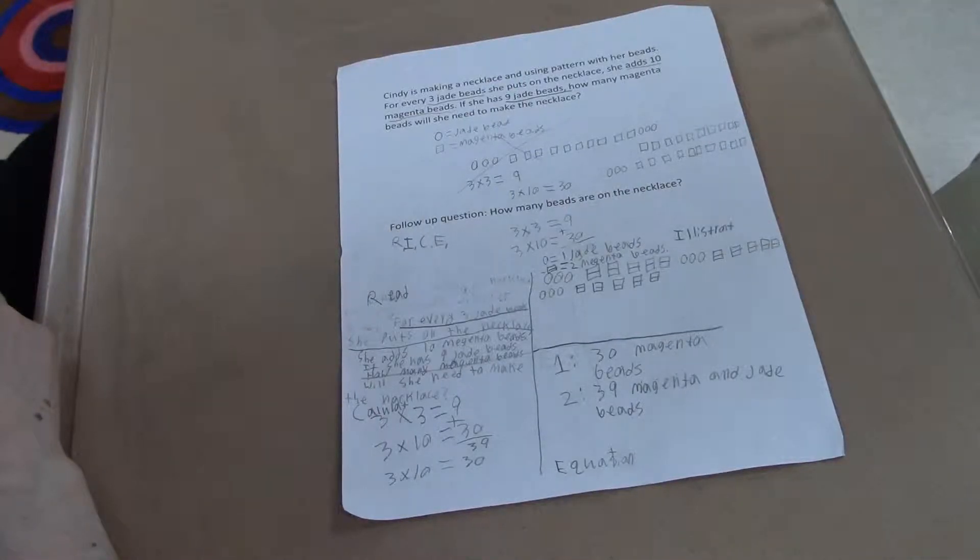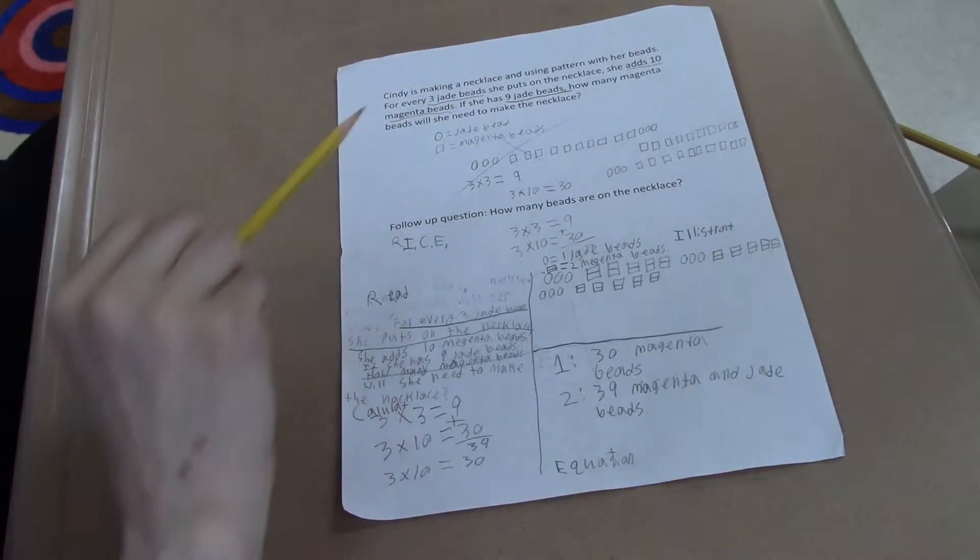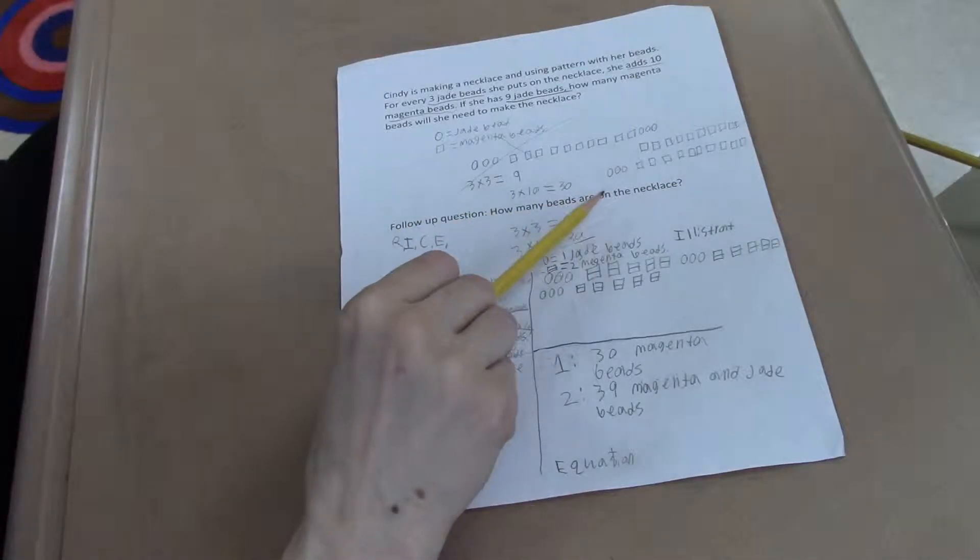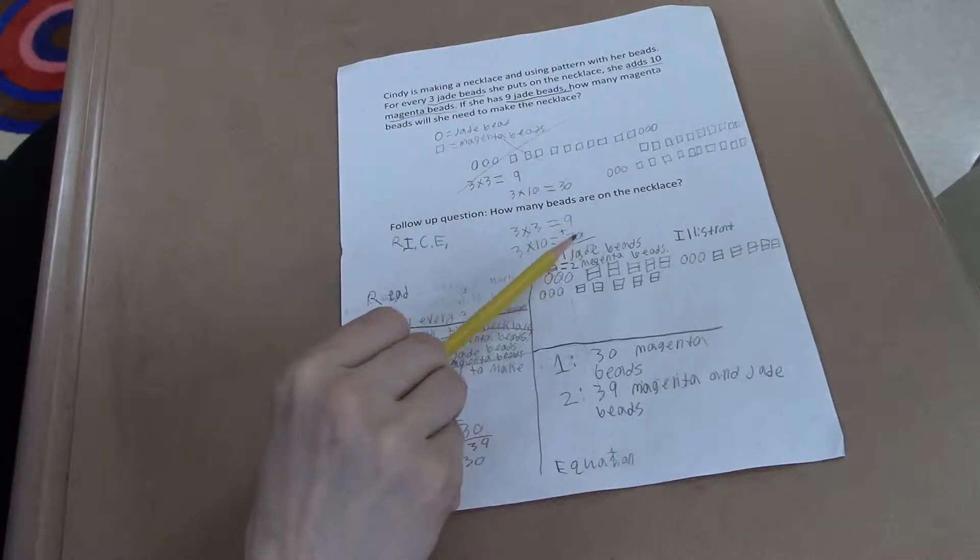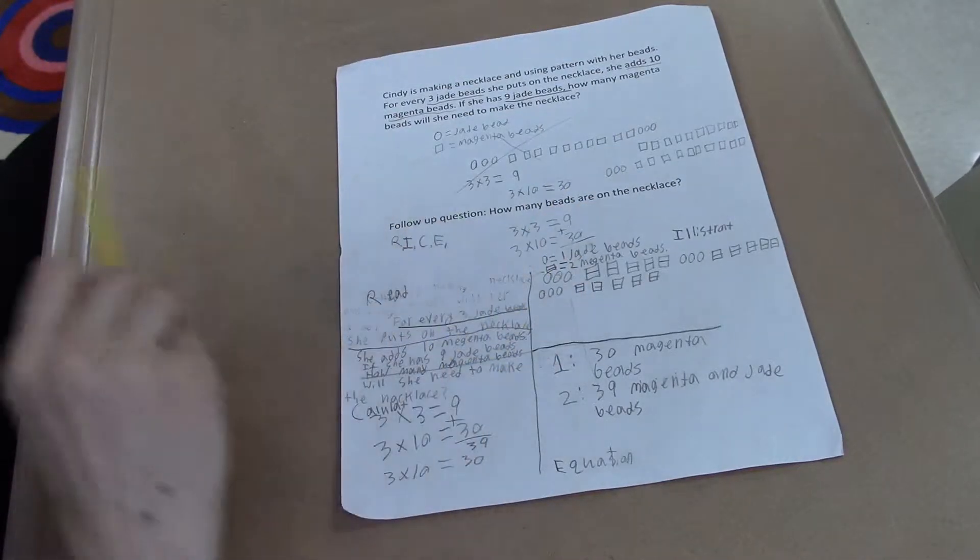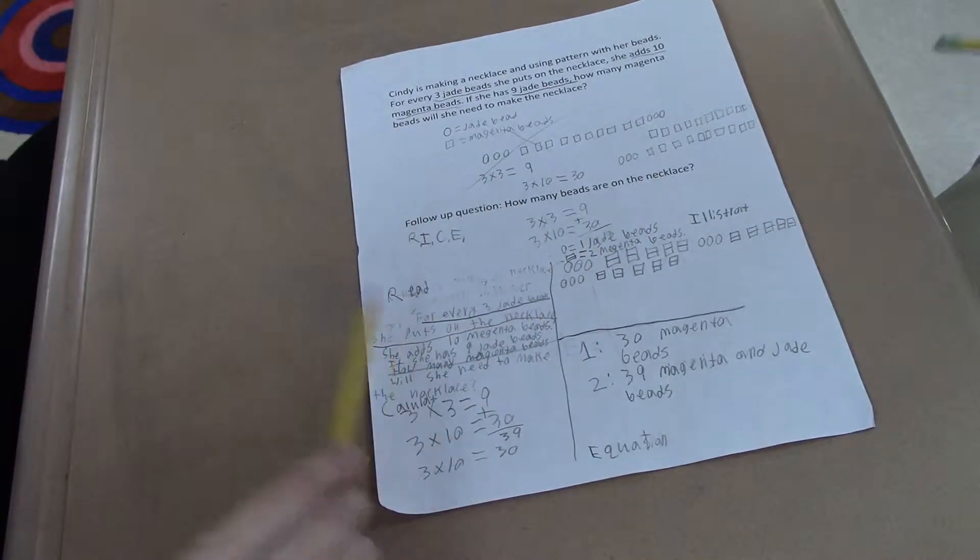I thought of a thing that we do in school, which is called RICE. So down here it looks like you used the RICE method. And you thought that that might be better than what you were doing up here to be able to solve this follow-up question? Yes. Can you explain what you did for your RICE method? What were each of these pieces?